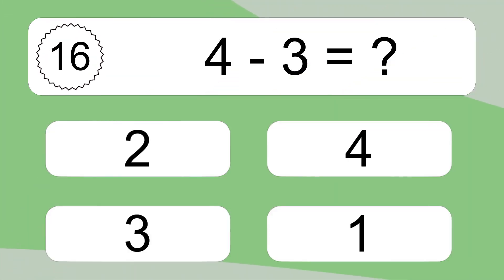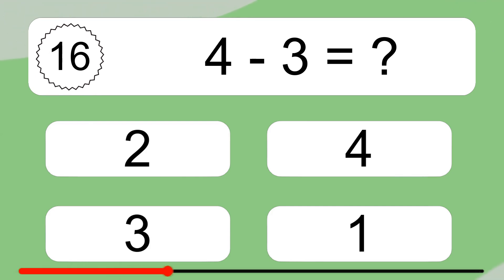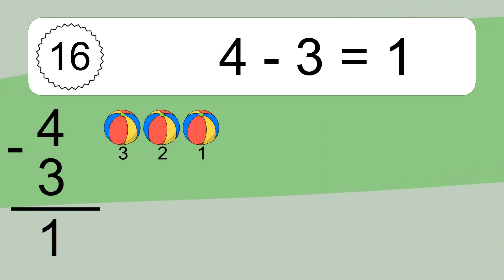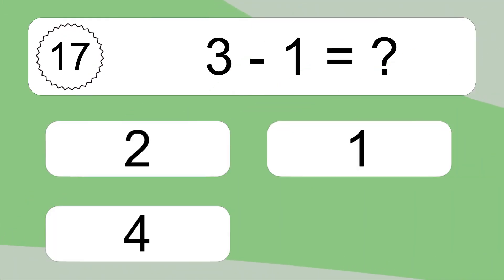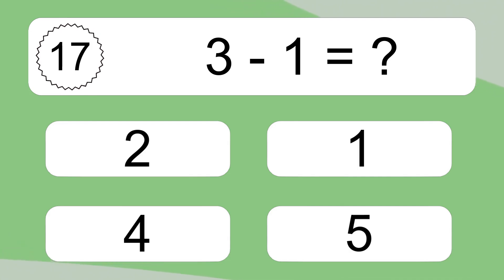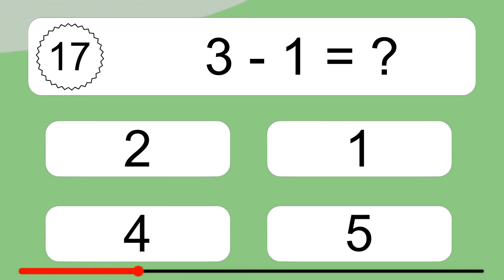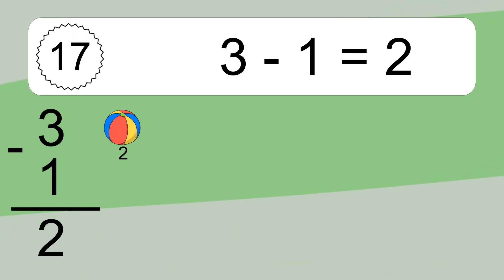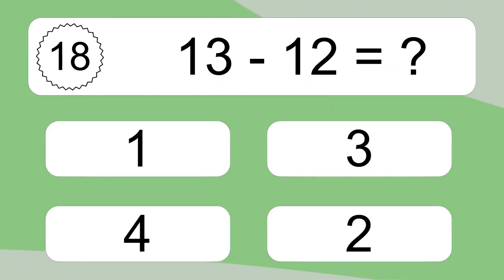4 minus 3 equals what? 4 minus 3 equals 1. Let's count it: 3, 2, 1. 3 minus 1 equals what? 3 minus 1 equals 2. Let's count it: 2.